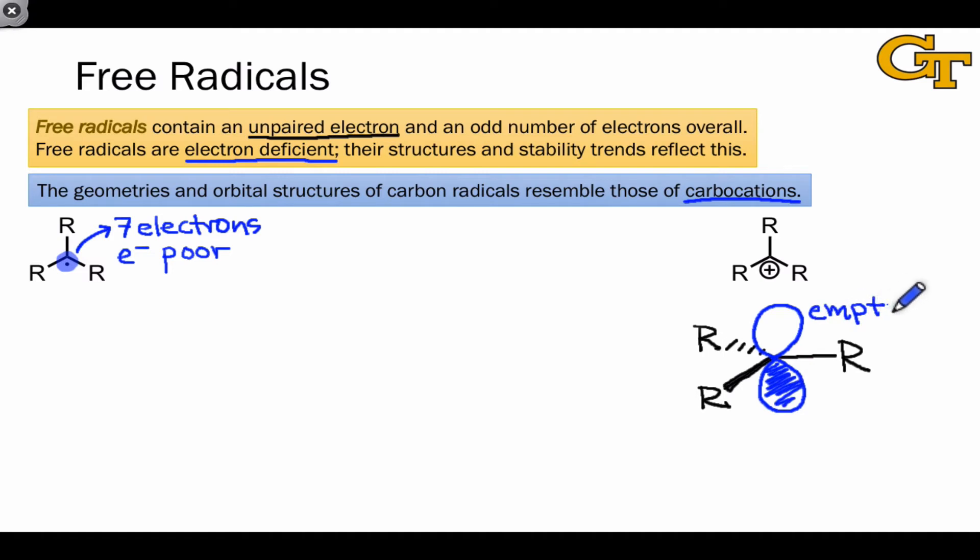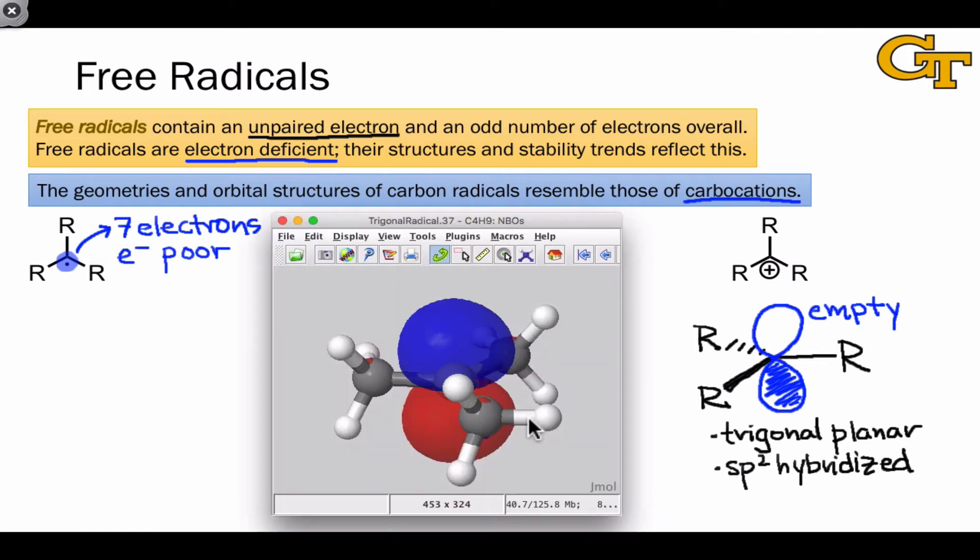This is really the site of electrophilicity, or electron-accepting behavior of a carbocation. Nucleophiles approach above or below the plane of the carbocation to overlap efficiently with one or the other of the lobes of this p-orbital. Carbon radicals with three r-groups have an analogous structure.